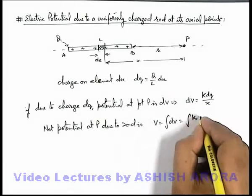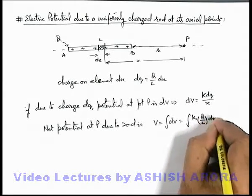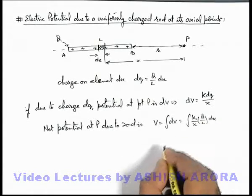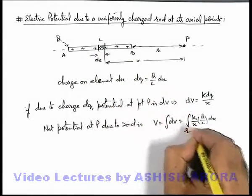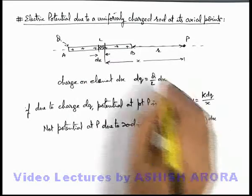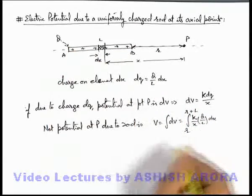We can substitute dq as q by l dx divided by x. And limits on x we can substitute from r to r plus l, that is from one end of the rod to the other end we need to integrate it.